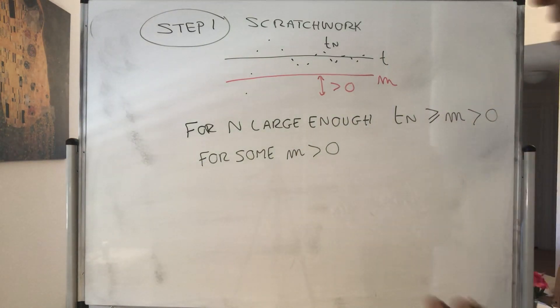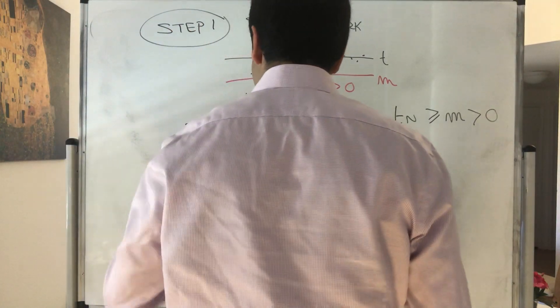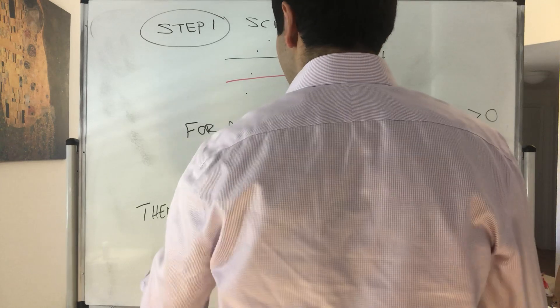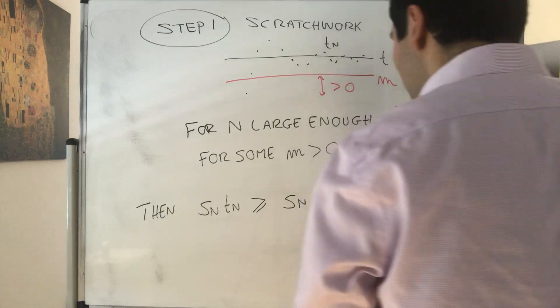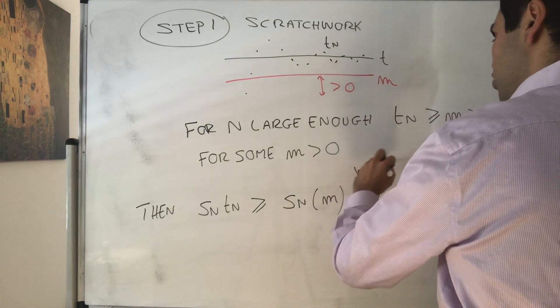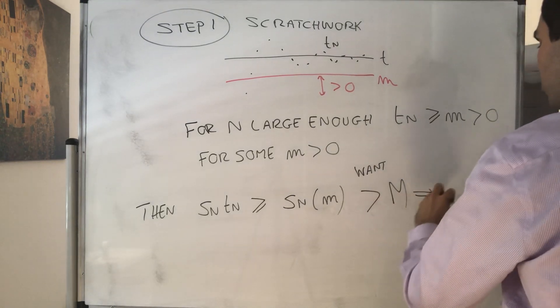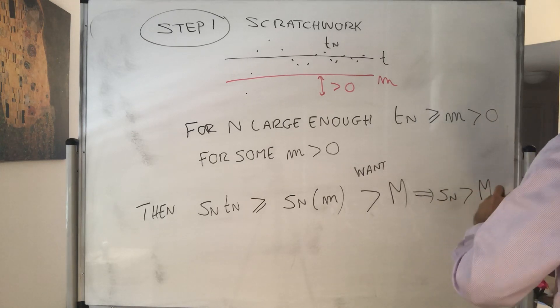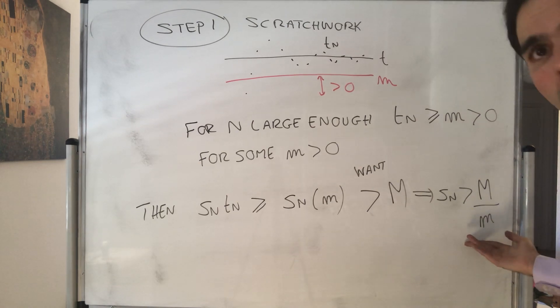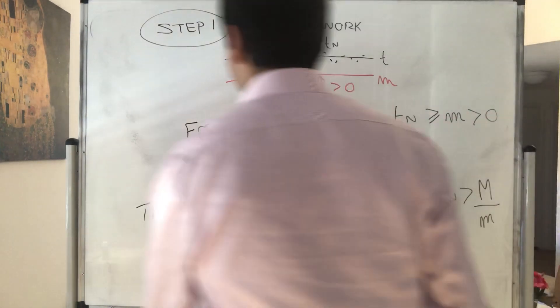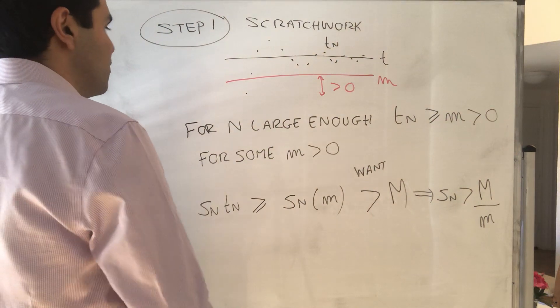But then, we're basically done, because then, the stuff we want to show is big, Sn Tn, then suddenly becomes greater or equal to Sn times m. And what we want, we want this to be arbitrarily large. So we want this to be bigger than capital M, for any m, which would require Sn to be bigger than M over little m. And we can definitely do this, because we know Sn goes to infinity. And so, this is the crux of the proof. And now, let's actually write down the proof.